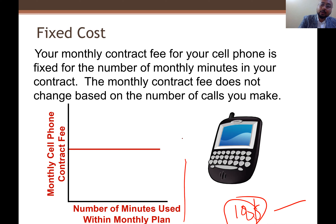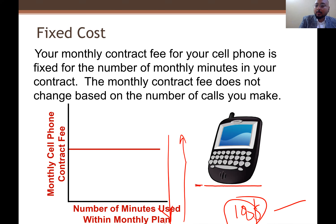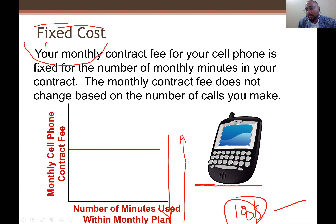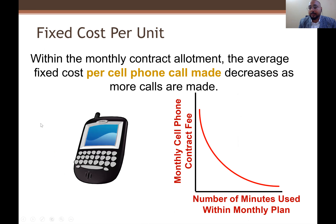Whether you send two messages, a thousand, twenty thousand, one hundred thousand, or one million messages — the cost is fixed. The behavior of fixed cost is: if units rise, cost remains the same; if units decrease, cost remains the same. In total, fixed cost has nothing to do with quantity — it remains the same.